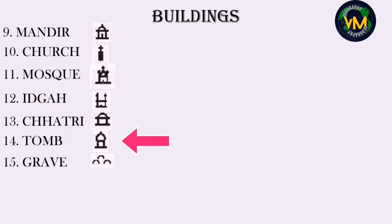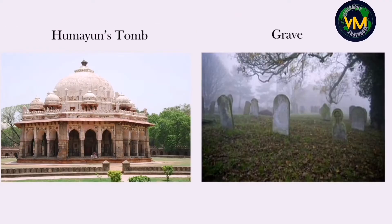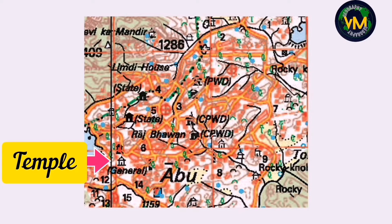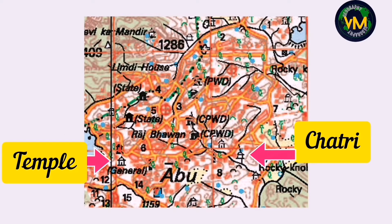Number fourteen is a tomb and number fifteen is a grave. A tomb is for great people — when they die, a monument is constructed over them. A grave is for common people, who are buried or cremated. In this topographical map you can see the difference between the symbol for a temple and a chatri, and you can also see graves.